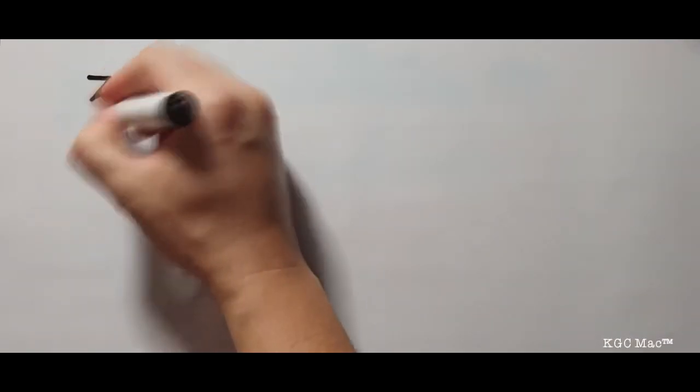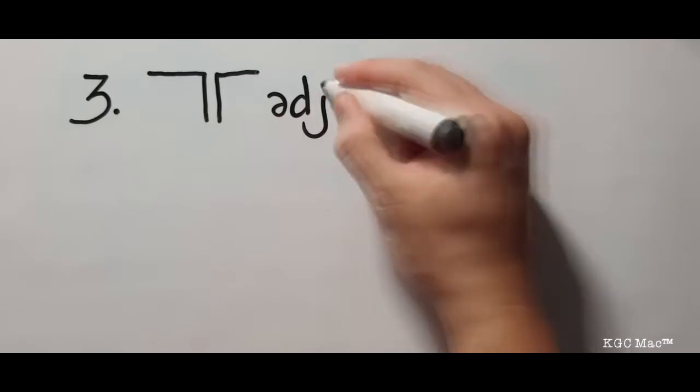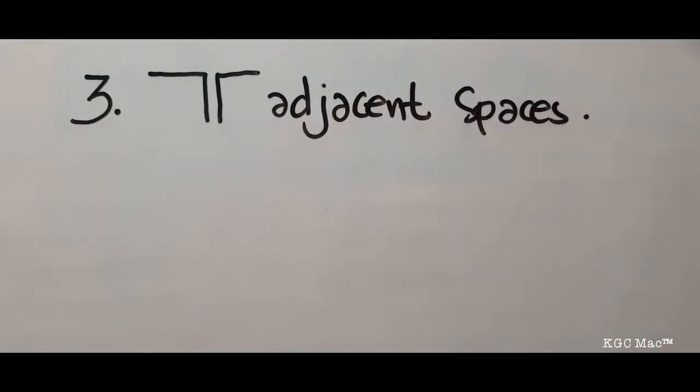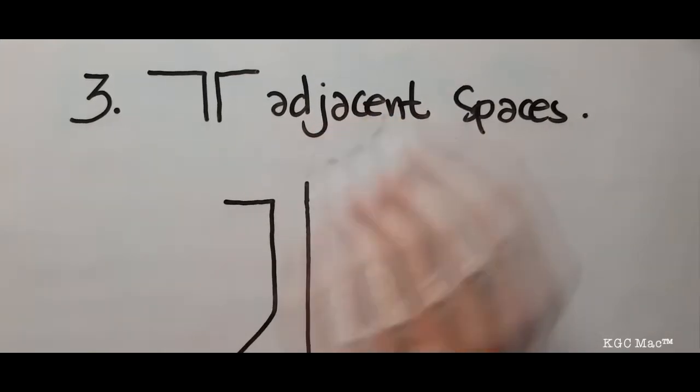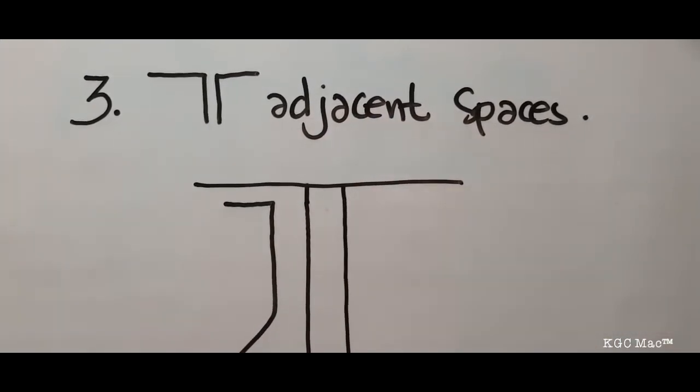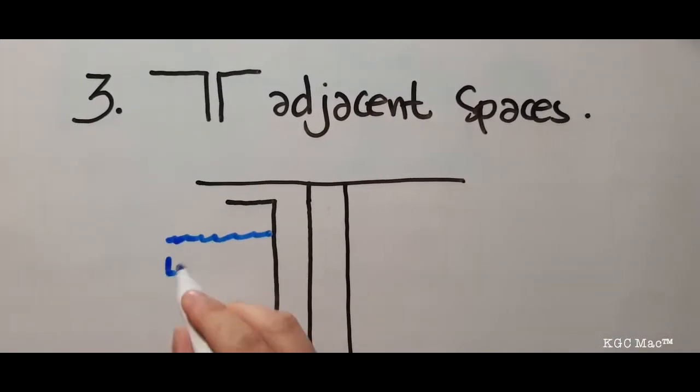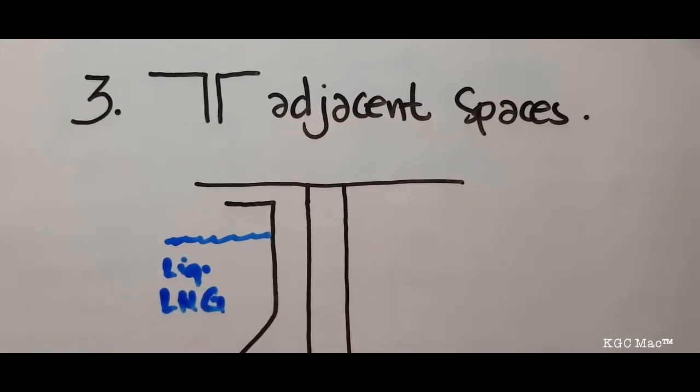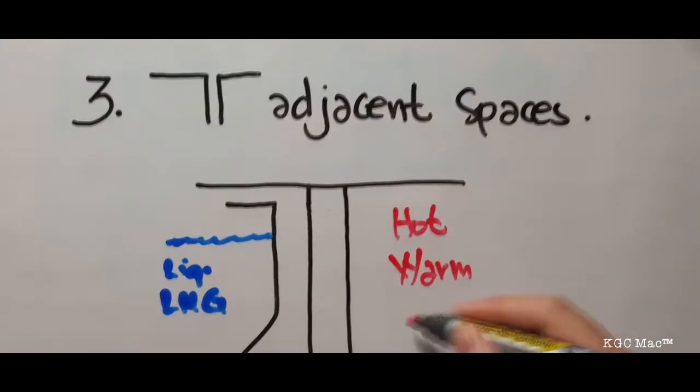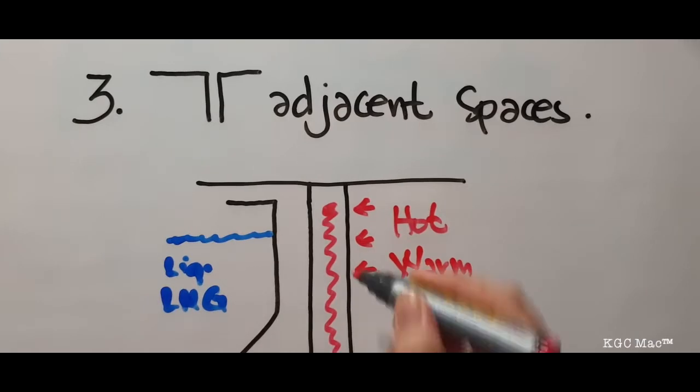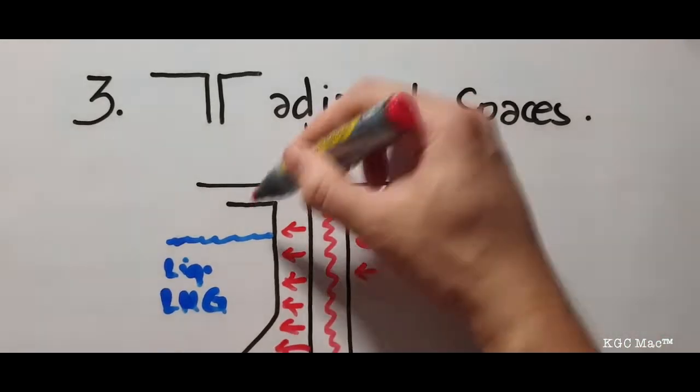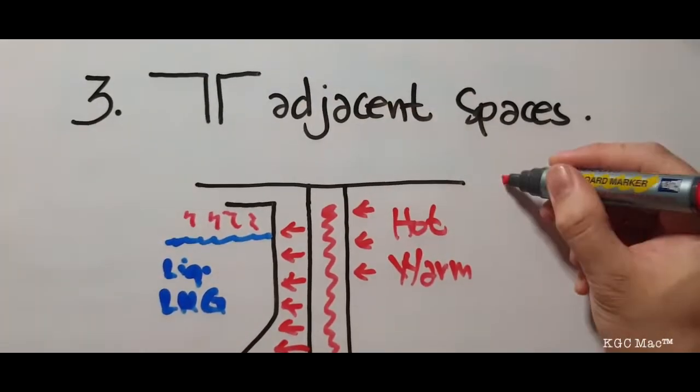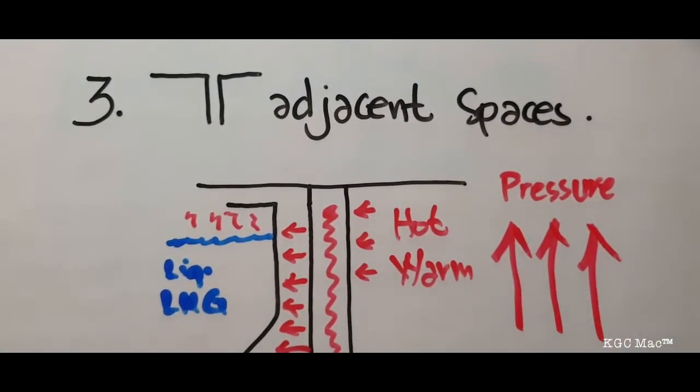The third factor that affects the tank pressure is heat transfer from adjacent tanks or spaces. This one is self-explanatory. If the adjacent space or the adjacent tank is hot, heat will slowly transfer, making the cargo evaporate faster. There are a lot of factors that may affect the tank pressure, but these three are the most common ones.